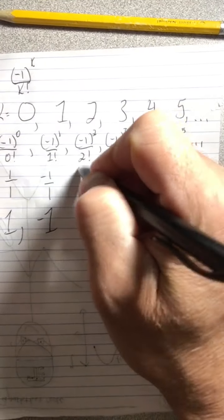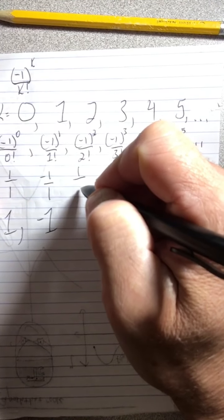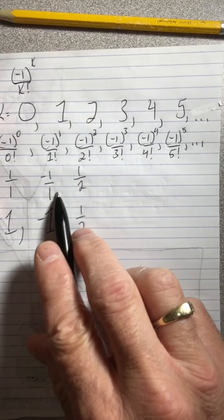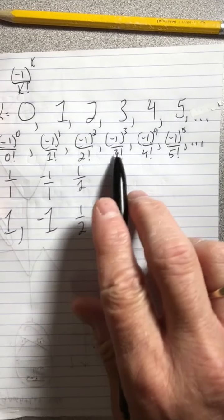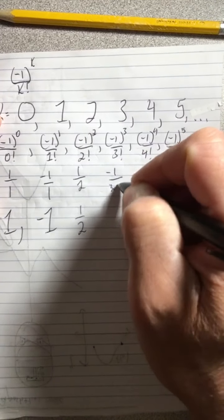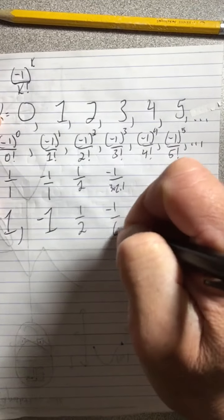Negative 1 squared is 1 over 2 factorial, which is 2 times 1, which is 2, so I get a half. Now we notice the pattern: positive, negative, positive, so this is going to be negative. And 3 factorial is 3 times 2 times 1, so we get negative 1/6.